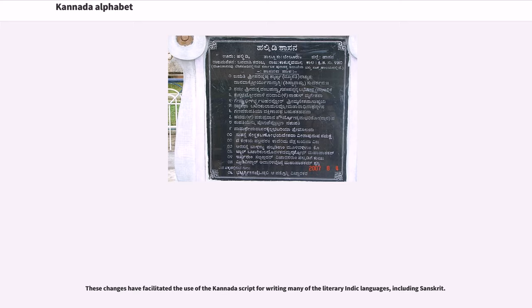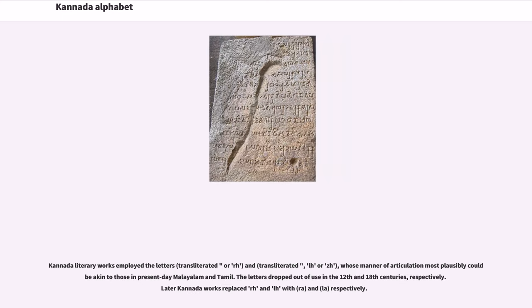Over the centuries, some changes have been made to the Kannada script. These changes have facilitated the use of the Kannada script for writing many of the literary Indic languages, including Sanskrit. Kannada literary works employed certain letters whose manner of articulation was akin to those in present-day Malayalam and Tamil. These letters dropped out of use in the 12th and 18th centuries respectively. Later Kannada works replaced RH and LH with N respectively.